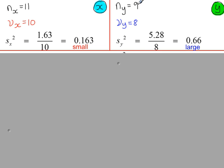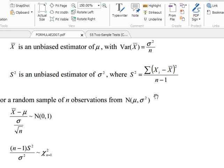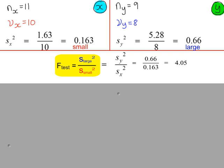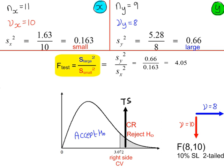For our two samples X and Y, the formula to work out the sample variance is on page 12 in the AQA formula book, dividing by N minus 1. The test statistic is the large value divided by the small one. As this is the large value, 8 degrees of freedom go along the top, and 10 degrees of freedom go down the side. The F distribution tables give a critical value of 3.072. The test value 4.05 is greater than 3.072, so we reject H0.